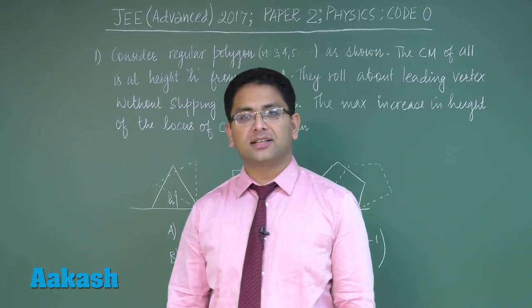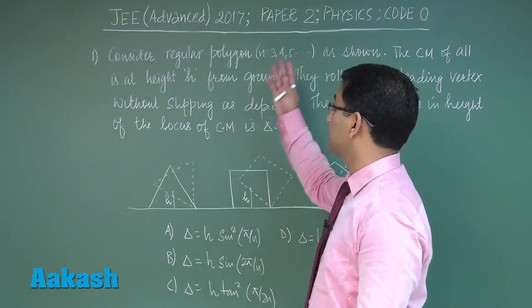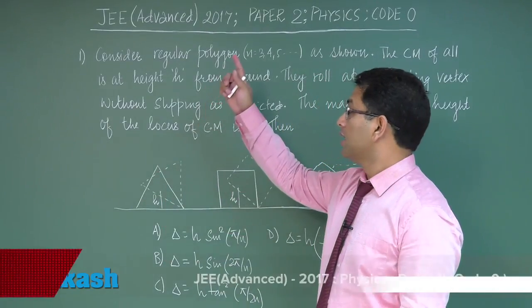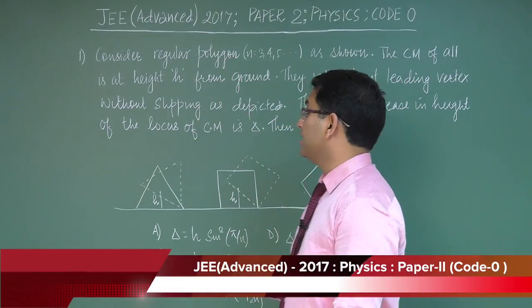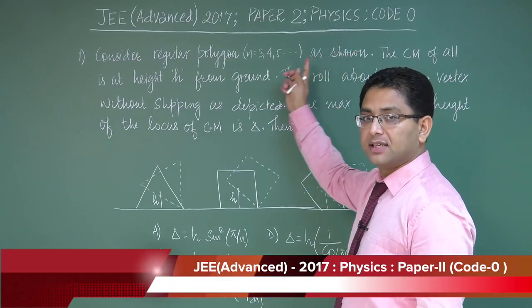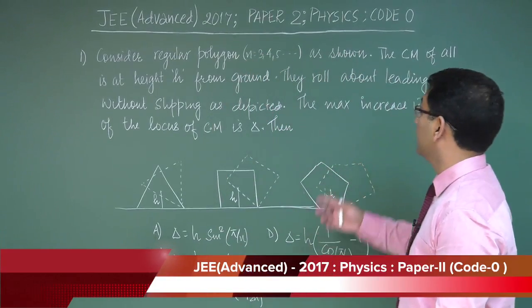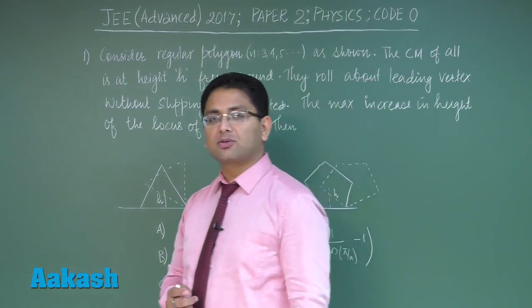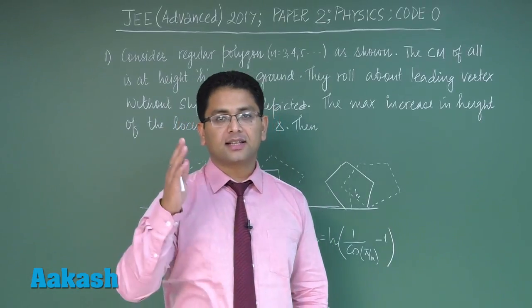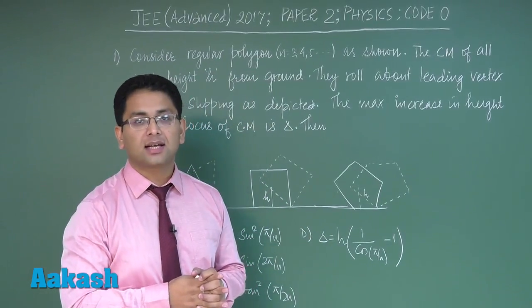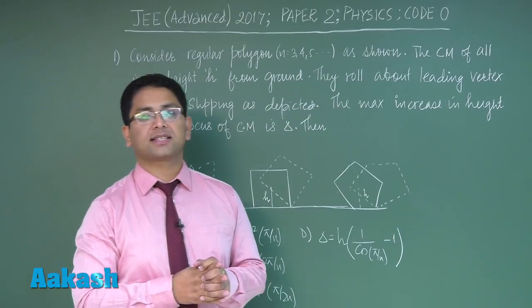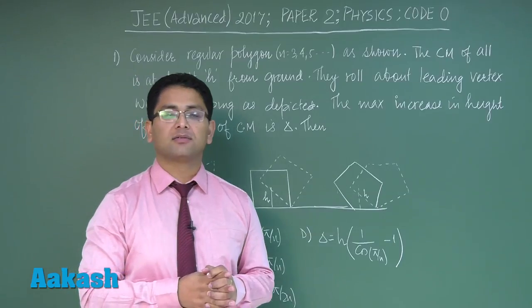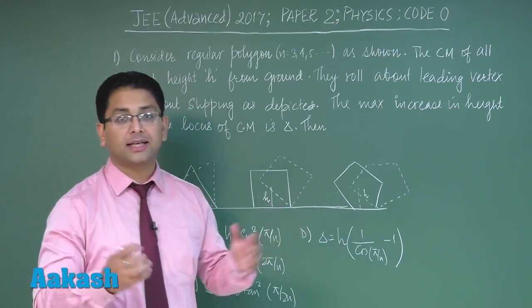Hello and welcome to the discussion session of physics questions that had been asked today on 21st May 2017 as given by JEE Advanced. We are discussing Physics Paper 2, Code 0. Let's begin. The first question is from section 1 and contains questions having only single option correct. The marking scheme is plus 3 for correct, 0 for not attempted, and minus 1 for wrongly solved or wrongly ticked.